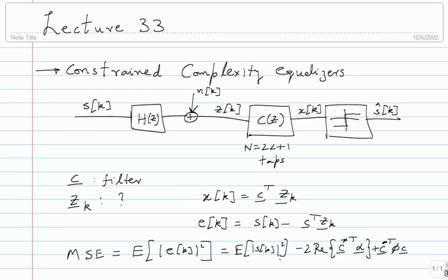Here α is the cross-correlation between s_k and z_k: E[s_k z_k^*], and Φ is E[z^* z^T], the autocorrelation matrix. Once you know α and Φ, the MSE is completely expressed as a quadratic form in c - which is what you want to optimize. You differentiate with respect to the variables, set it to zero, and get only linear equations. That linear equation turns out to be Φ c_opt = α.